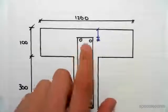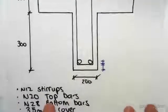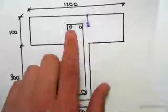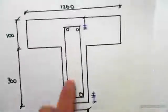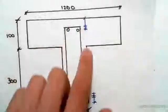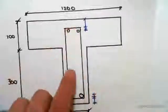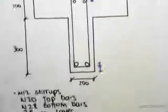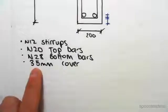Now these top bars are N20 top bars. The bottom bars are N28 bars. There are N12 stirrups. Stirrups are what enclose the bars in like a cage type thing. Their importance will become a little bit more relevant when we see some later topics.